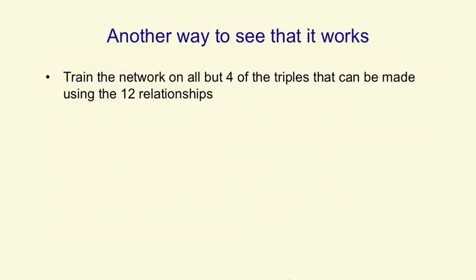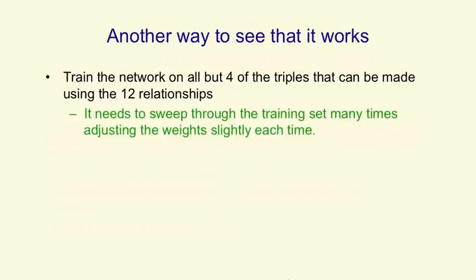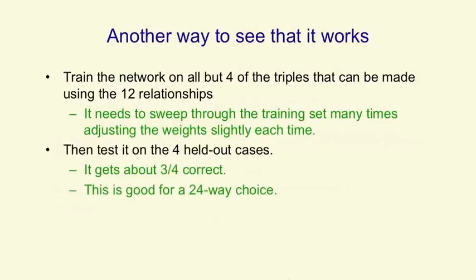Another way to see that the network works is to train it on all but a few of the triples and see if it can complete those triples correctly — does it generalize? There are 112 triples; I trained it on 108 and tested it on the remaining four, and it got either two or three of those right. That's not so bad for a 24-way choice. It does make mistakes, but it didn't have much training data — there aren't enough triples to really nail down the regularities well — and it does much better than chance. If you train it on a much bigger dataset and have thousands of relationships, you only need to show it a small percentage before it can start guessing the others correctly.